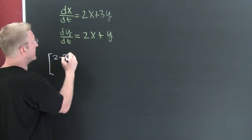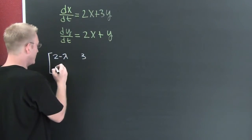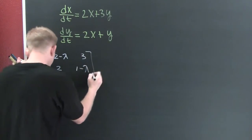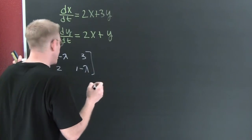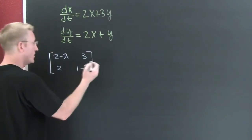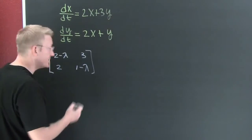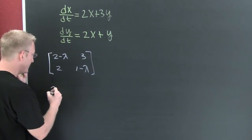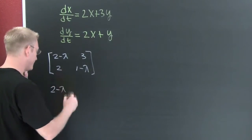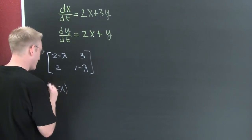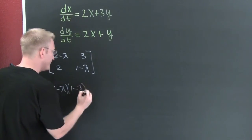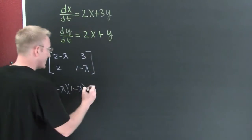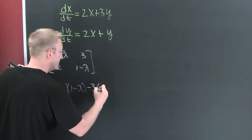This is going to be two minus lambda, three, two, and then one minus lambda. And I wanted to take its determinant so that I could get my characteristic equation. So then taking the determinant, this is going to be two minus lambda times one minus lambda minus three times two.